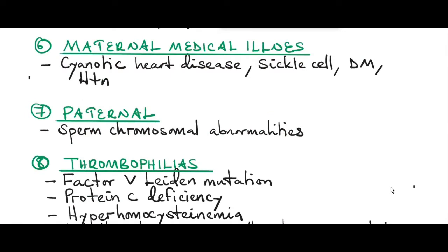Another cause of miscarriage is maternal medical illnesses like cyanotic heart disease, which can result in poor oxygenation of the growing fetus. Sickle cell anemia means the mother already has a low hemoglobin, which is insufficient to keep up with the developing fetus. Poorly controlled diabetes mellitus and poorly controlled blood pressure — such as in chronic hypertension, pregnancy-induced hypertension, and preeclampsia — have also been responsible for miscarriages.